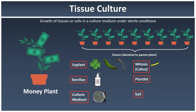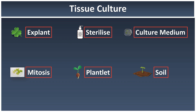When there are enough nutrients, cell division occurs — mitosis divides the cells repeatedly until they form a lump of cells called a callus. The callus continues to grow, becoming an embryo, which then becomes a baby plant called a plantlet. The plantlet is then transferred into soil for further growth. The part of the plant tissue that is cut is what we call the explant, and it is sterilized to ensure it is free from microorganisms.